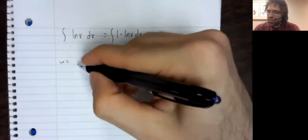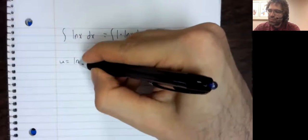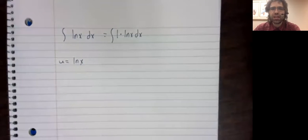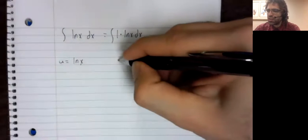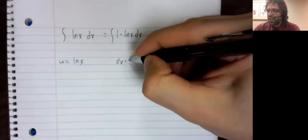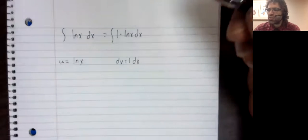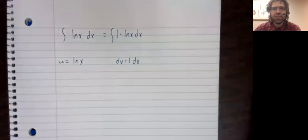LIATE suggests we should let u be the natural log of x. That would leave one dx as dv.